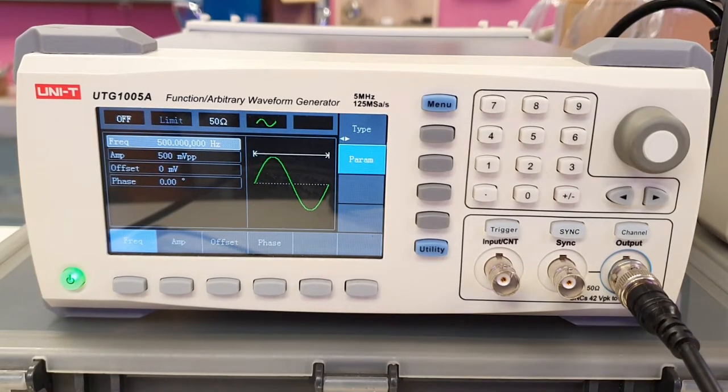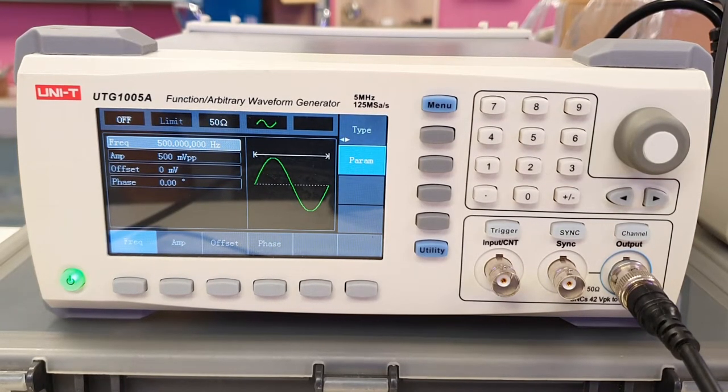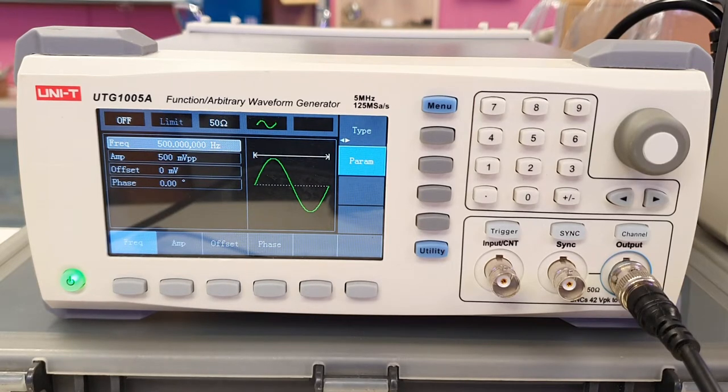The function generator is a device used for generating a signal into a circuit. The default setting for UTG1005A function generator load termination is 50 ohms.